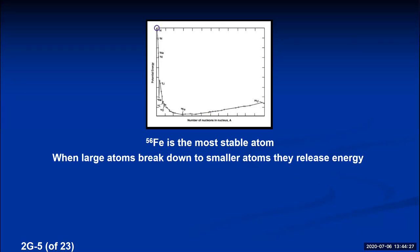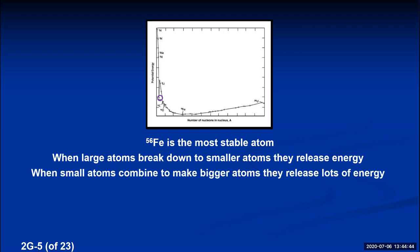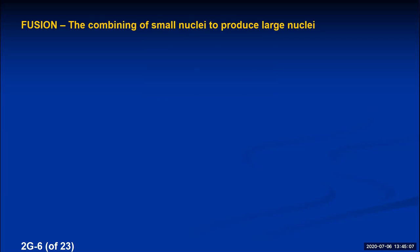If you take hydrogen atoms and make them combine to form helium atoms, you can see the large energy difference on the potential energy graph. The process of small atoms combining into larger atoms is called fusion — the combining of small nuclei into larger nuclei. This occurs in the centers of stars like our sun, requiring very high temperatures and pressures to overcome the repulsion of positive hydrogen nuclei coming together.